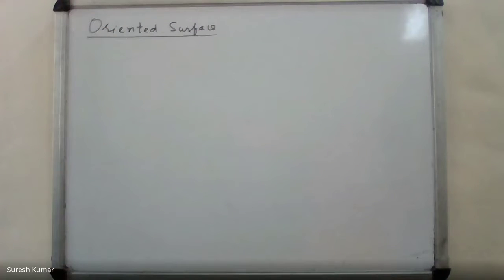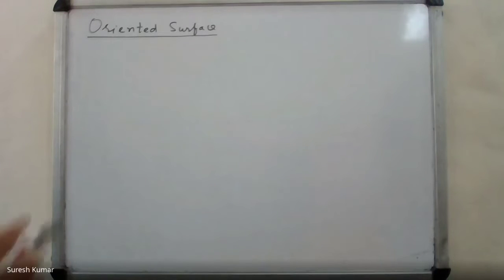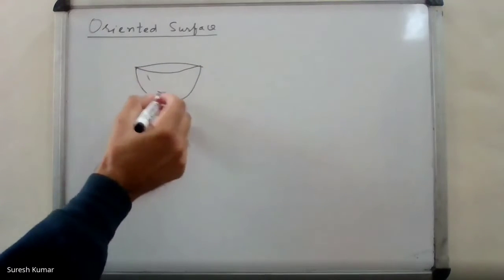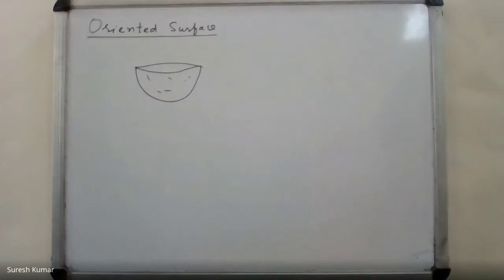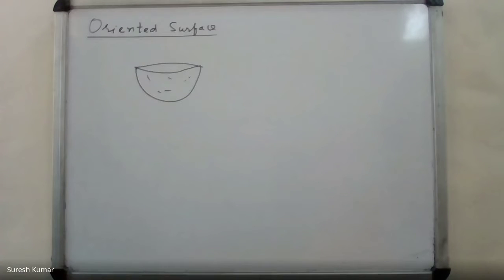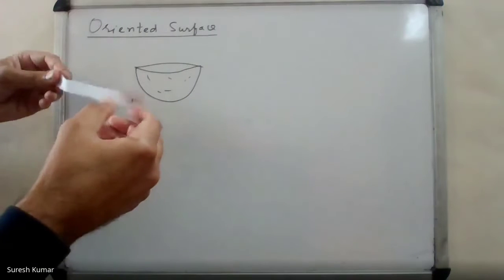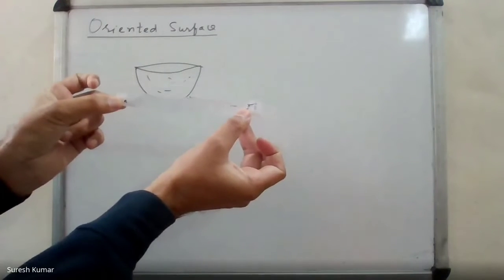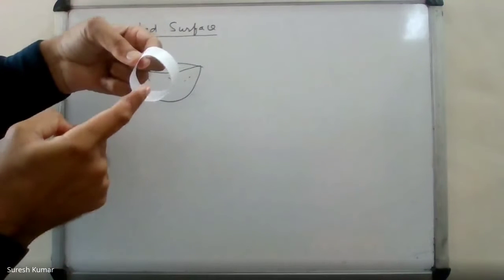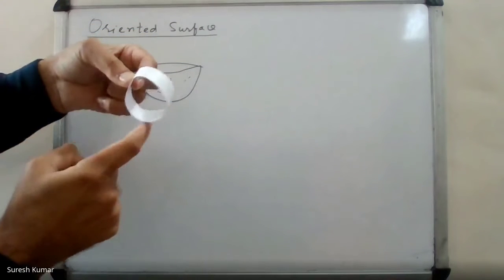What is the meaning of oriented surface? A surface for which you can identify the two faces clearly. See this surface — a bound kind of surface. You can easily identify the outer surface and the inner surface. Consider this rectangular strip: if I join the two ends directly like this, you can identify the inner face and the outer face of the surface.